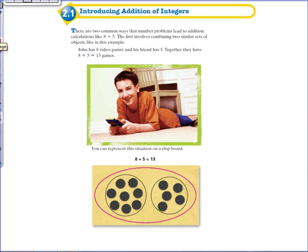There are two common ways that number problems lead to addition calculations like 8 plus 5. The first involves combining two similar sets of objects, like in this example.